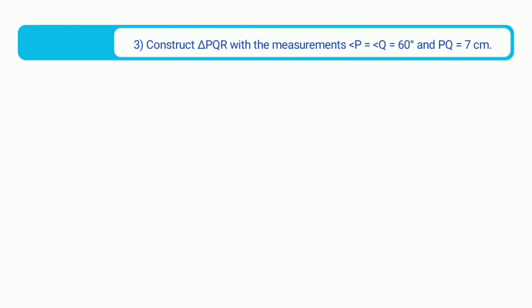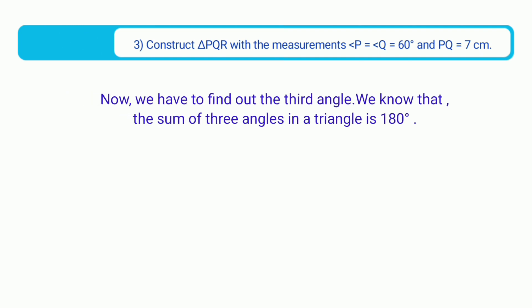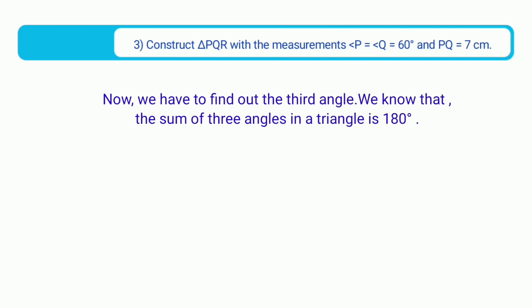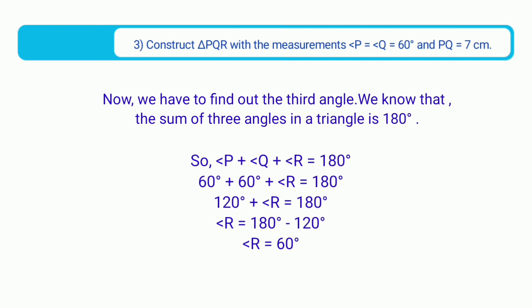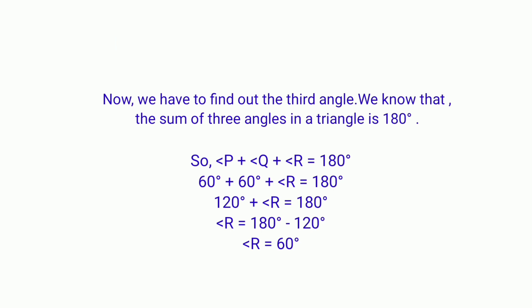Third sum: Construct triangle PQR with measurements angle P equals to angle Q equals to 60 degrees and PQ equals to 7 cm. We find the third angle: 60 plus 60 equals 120 degrees, so angle R equals 180 minus 120, which is 60 degrees. Therefore angle R equals 60 degrees.